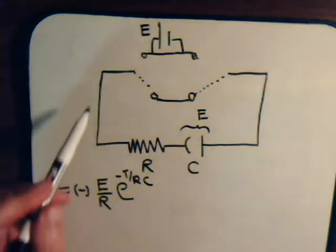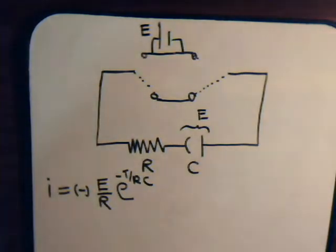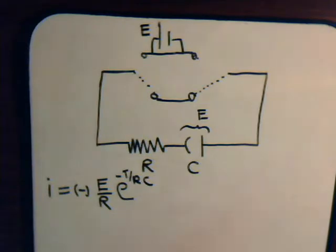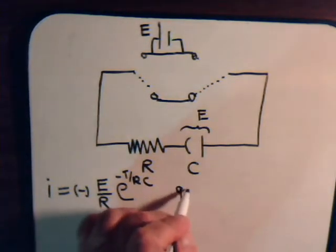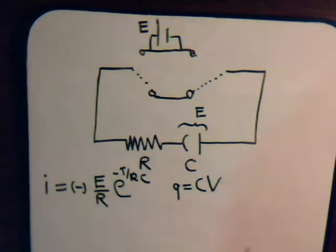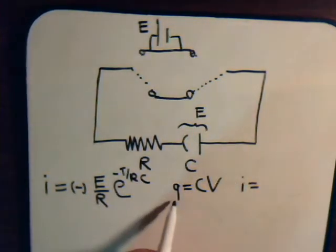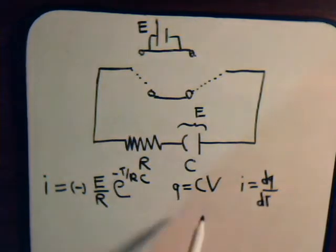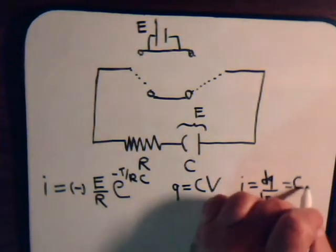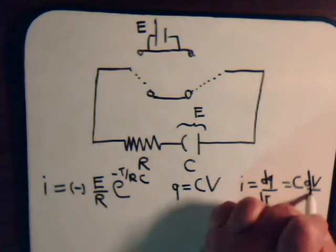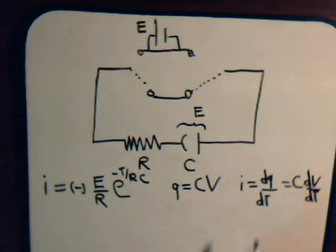What is the discharge voltage for the capacitor while it's discharging? We know that in general for a capacitor q equals CV. Current is dq/dt, so we have i equals dq/dt, which equals C times dV/dt. That relationship i = C·dV/dt is what we're going to be working with.